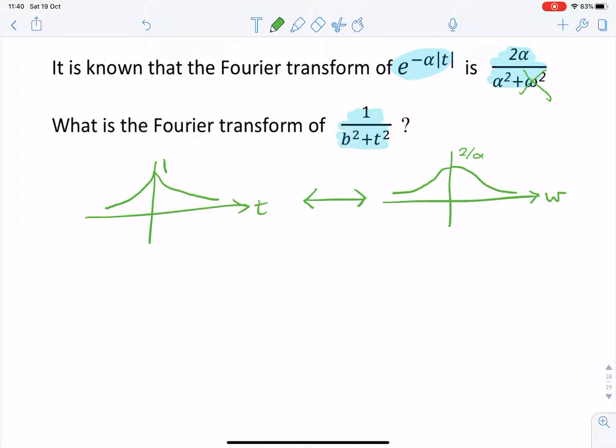And the question is, find the Fourier transform of that. So that looks very similar to that. So what they're asking for is if we had something in the time domain that looked like that.